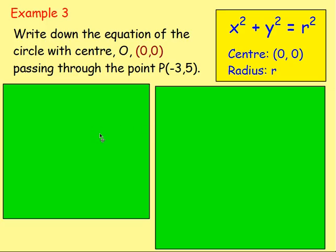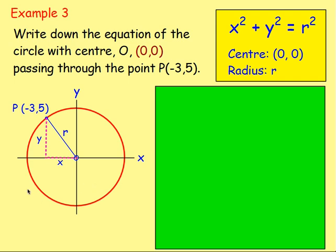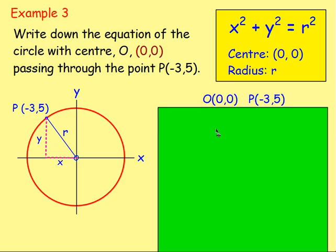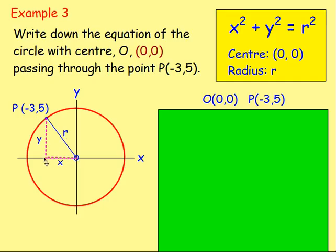Example 3: write down the equation of the circle with centre O, that's the origin (0,0), passing through the point (-3, 5), which is point P. You may wish to draw it — you'd have your circle with the origin as the centre and the point (-3, 5) on the circle. From that, you know the origin and point P, so you need to work out what r is — the length of this radius — in order to get r-squared. You can think: I'm coming back 3 units and going up 5 units, so you can use Pythagoras with r-squared equals 3-squared plus 5-squared.